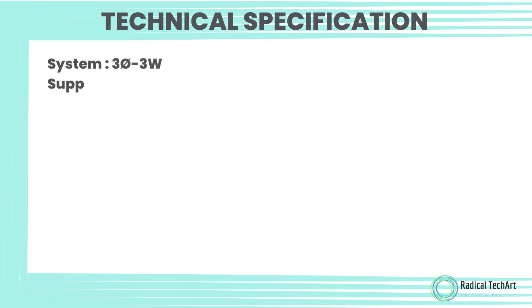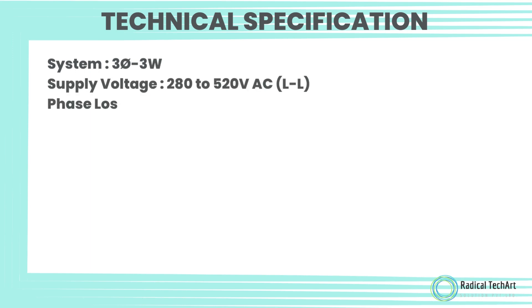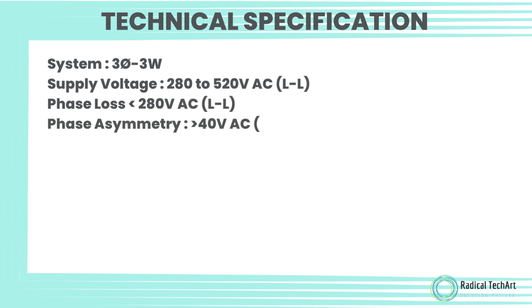Technical specification. System: 3 phase, 3 wire. Supply voltage: 280 to 520 volt AC line to line.